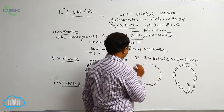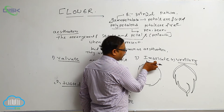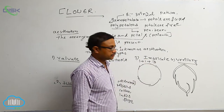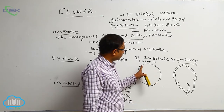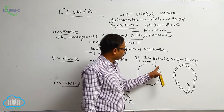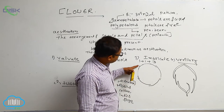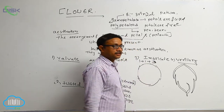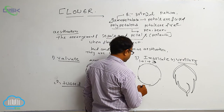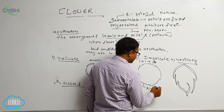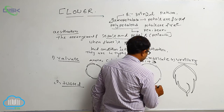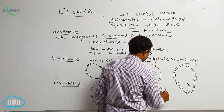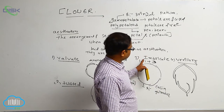After that, imbricate aestivation. In imbricate aestivation, overlapping does occur but it is not regular — no particular direction is present. In the 1+1+3 condition: one perianth has both margins completely inside, one perianth has both margins completely outside, and the remaining have one margin in and one margin out. This is known as imbricate aestivation. Examples: Cassia and Gulmohar.